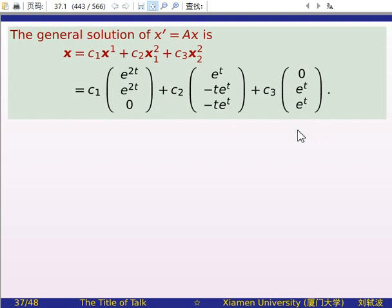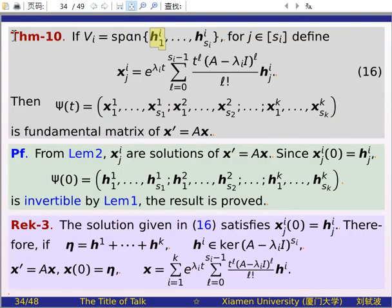We have now obtained three solutions: x_1, x_{2,1}, and x_{2,2}. Putting them together, the general solution is the linear combination C_1*x_1 + C_2*x_{2,1} + C_3*x_{2,2}. This demonstrates how to apply the theorem to find the general solution of a linear system with a non-diagonalizable coefficient matrix.